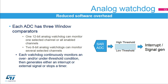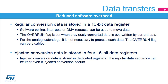Each ADC has three integrated analog watchdogs with high and low threshold settings. The ADC conversion value is compared to this window threshold. If the result exceeds the threshold, an interrupt or external signal can be generated, or a timer can be immediately stopped without CPU intervention. The ADC conversion result is stored in a 16-bit data register. The system can use CPU polling, interrupts, or DMA to make use of the conversion data. An overrun flag can be generated if data is not read before the next conversion data is ready. For injected channel conversions, four dedicated data registers are available.